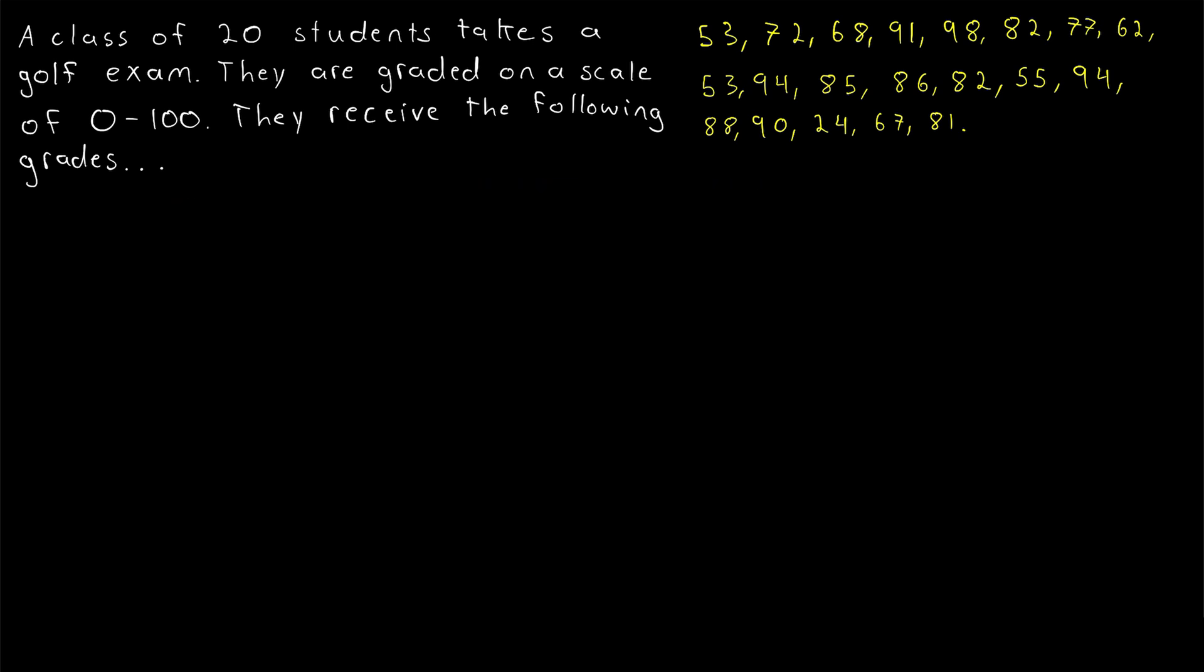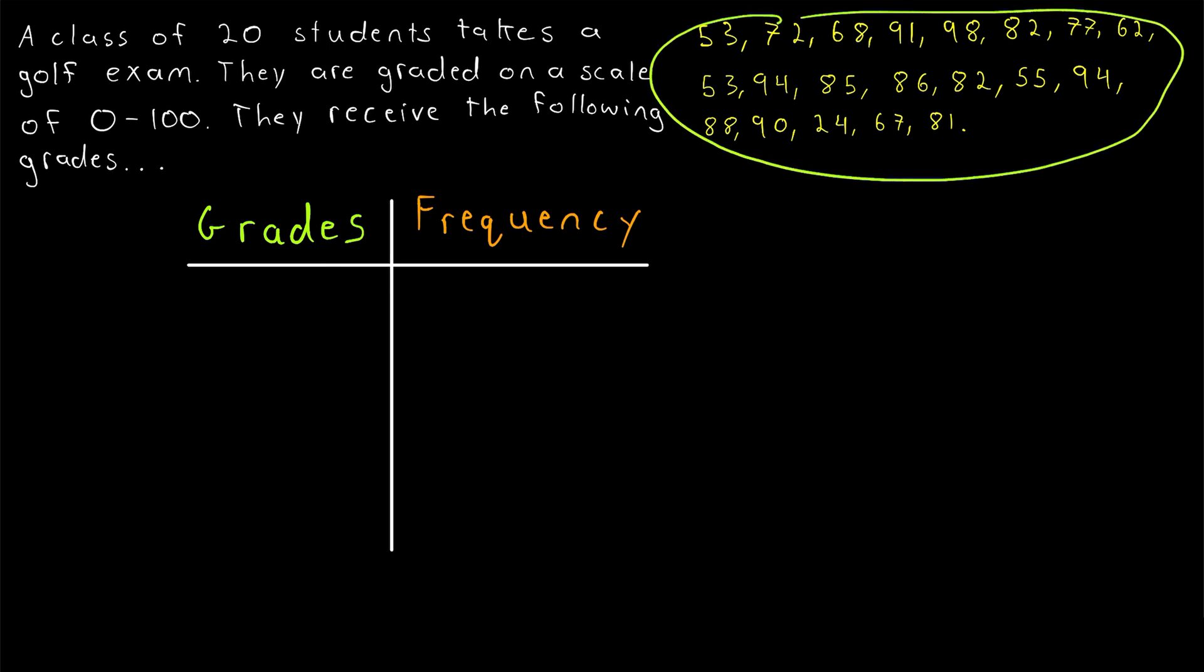So we can just begin by constructing a basic frequency table, which as we just saw in the first column has our data. In this case, our data are a bunch of grades, so we'll call this first column grades. And then nothing fancy, the second column will just be the frequency of each grade. Now we have our first important decision in representing this data. Should we create a row for each distinct data point or should we sort this data into distinct intervals? Since most of these grades are distinct and don't repeat in the data set, for example, there's only one grade of 72 and I think there's only one 68, that's the case with most of these grades.